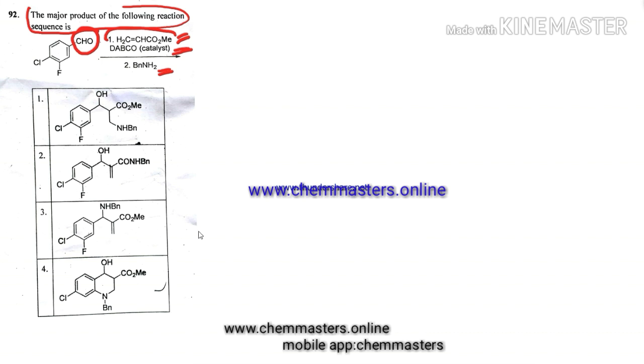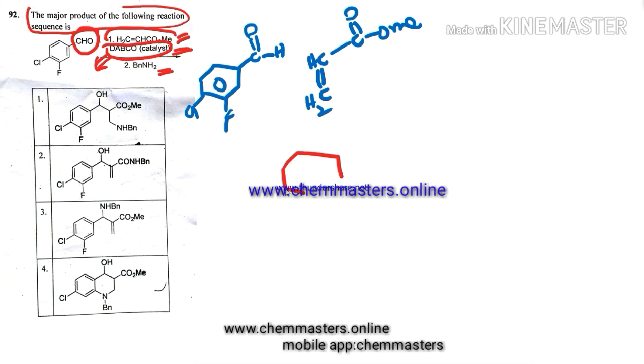We know that DABCO is a base. Now just draw the structure of given substrate. Just expand aldehyde. Now I'm just drawing the structure of acrylate in suitable form for the mechanism. Just observe it. Here we have given the special base that is DABCO. Just try to draw its structure here which contains two nitrogens in its ring.